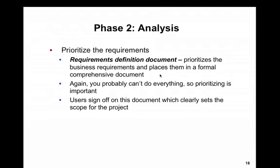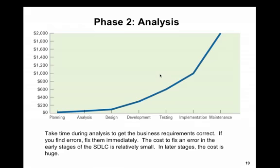In terms of analysis, you prioritize requirements. They end up in a document called the requirements specification document. You list everything out, document it, and it becomes a contract. You take the documented requirements, get them signed off by your boss, and most importantly get the customer, end users, or department to sign off — confirming this will meet the requirements and solve the problem requested. That's how the analysis works: planning, analysis, design, development, testing, implementation, and maintenance.